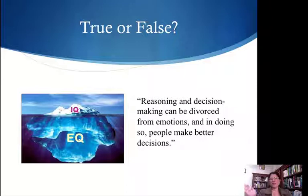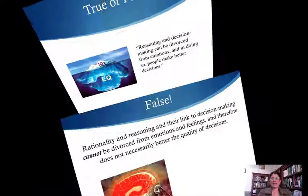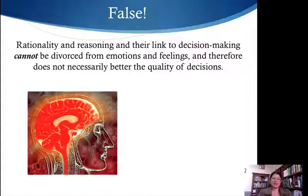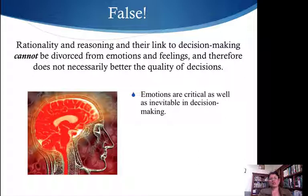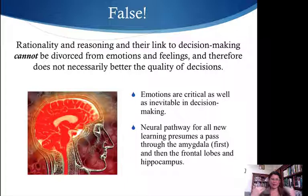Now let's look at the connection between emotions and decision-making. Big question — true or false: reasoning and decision-making can be divorced from emotions, and in doing so people make better decisions. Is it better to have a cool head, be rational, and make better decisions? Well, we might like to think that, but the bottom line is that's impossible. Reasoning and decision-making are completely connected to feelings and emotions. Emotions are just critical in decision-making — this has to do with physiology, how things enter the brain. The first stops are an emotional check, and then there's a rational check.